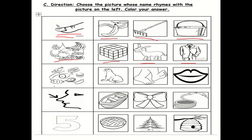Next we have 'meat'. Which picture rhymes with meat — is it seal, feet, or lip? Next we have 'nose'. Which picture rhymes with nose — is it boat, bow, or hose?